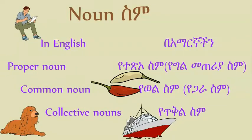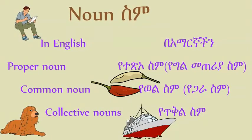We are going to study three nouns today: proper noun, common noun, and collective nouns. Proper nouns are given to a specific person, country, or a specific individual in the whole world — that we identify a person or a country or a mountain, or anything that is only one that exists. We call those proper nouns.